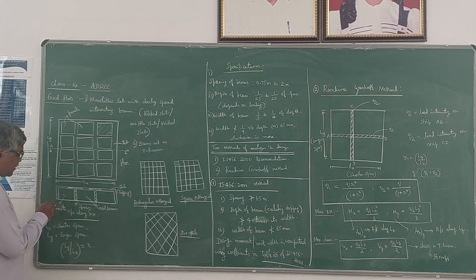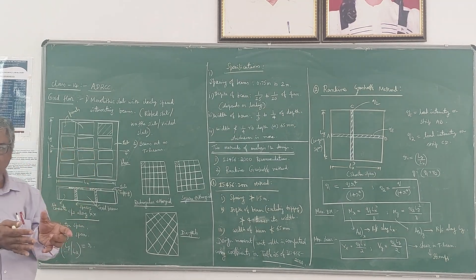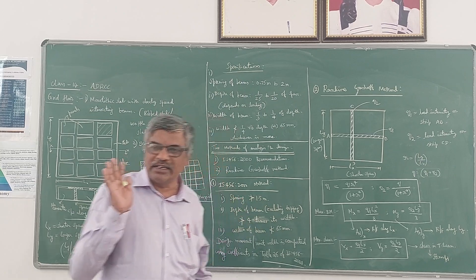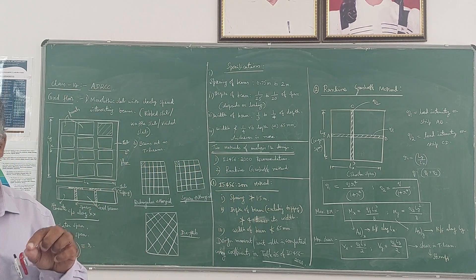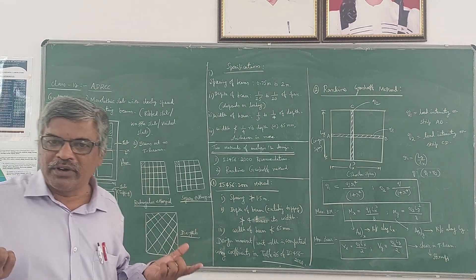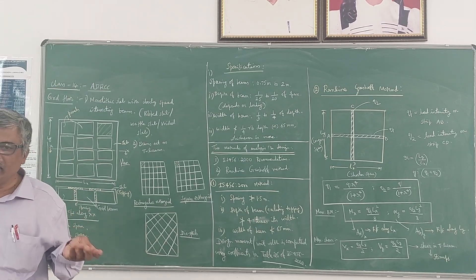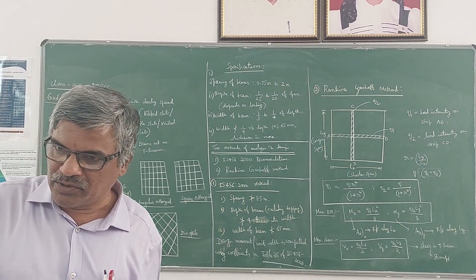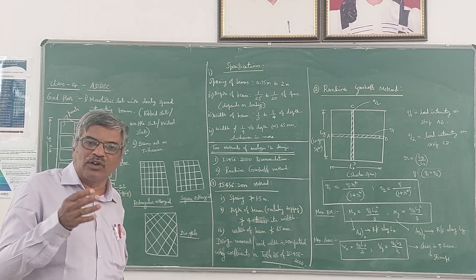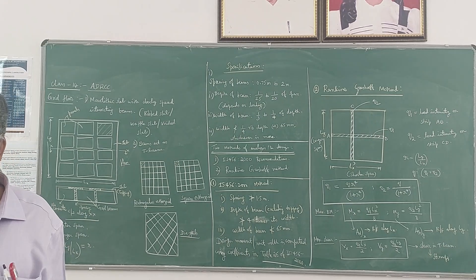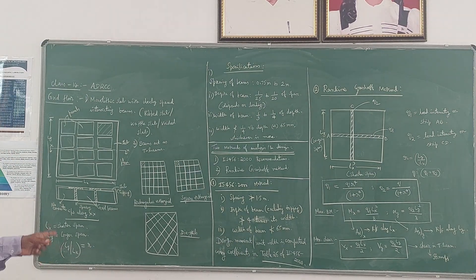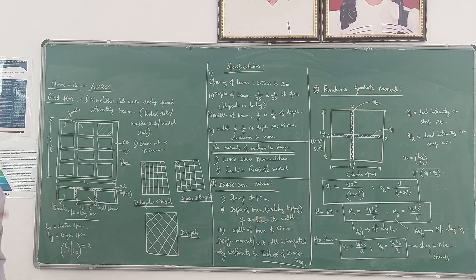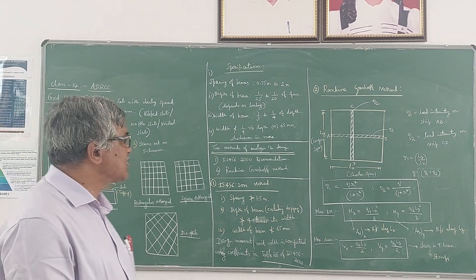In RCC, whatever concrete is in the tension zone will not take any load. Concrete is strong in compression and steel is strong in tension, which is why we provide steel in the tension zone. If it is a doubly reinforced section, we provide steel in the compression zone also. When sagging bending moment develops, the top is the compression zone and the bottom is the tension zone. So the tension zone concrete is extra and not needed for strength — in grid floors you can avoid it, reducing concrete quantity. This is the advantage.